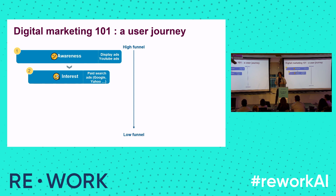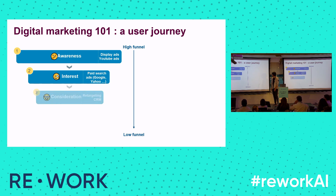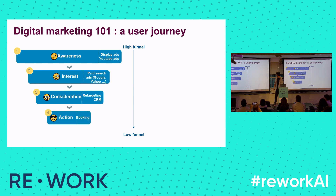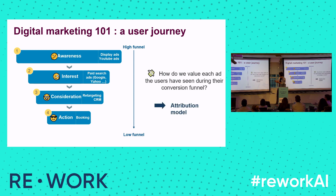Paid search ads on Google, Yahoo, or Bing could be used for the interest stage. Then there is consideration: people have already searched a trip on BlaBlaCar but have not converted yet. And the last step is action — the booking in our case. This is what we call a funnel, with the high funnel being the first steps and the last step being the low funnel. The attribution model is the way to measure the efficiency of each ad and each type of campaign.